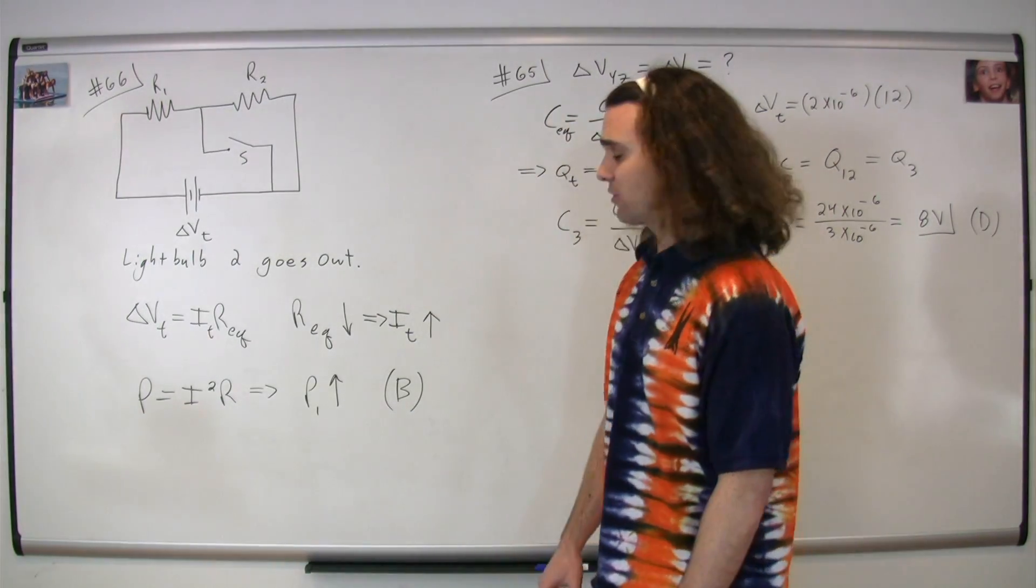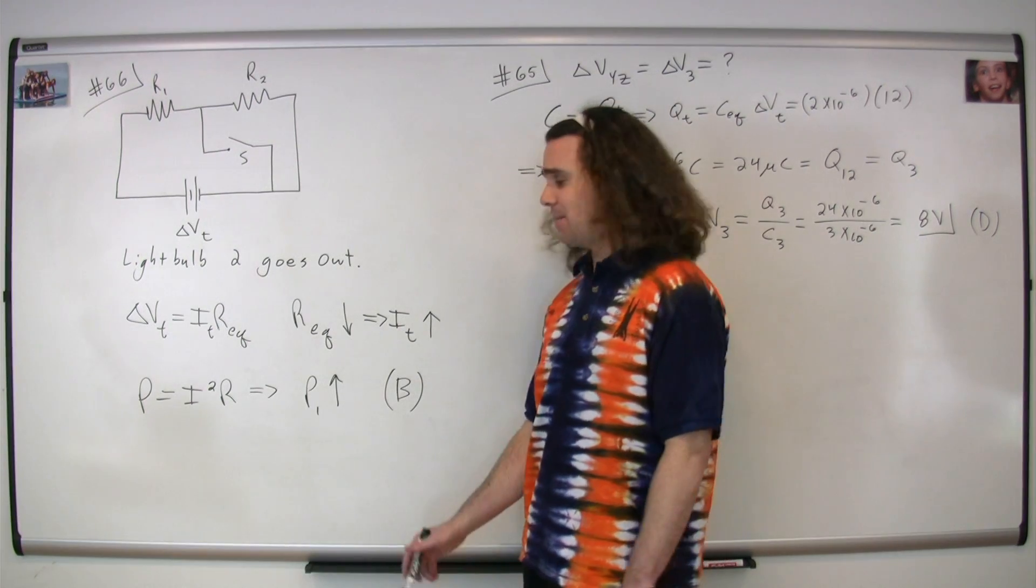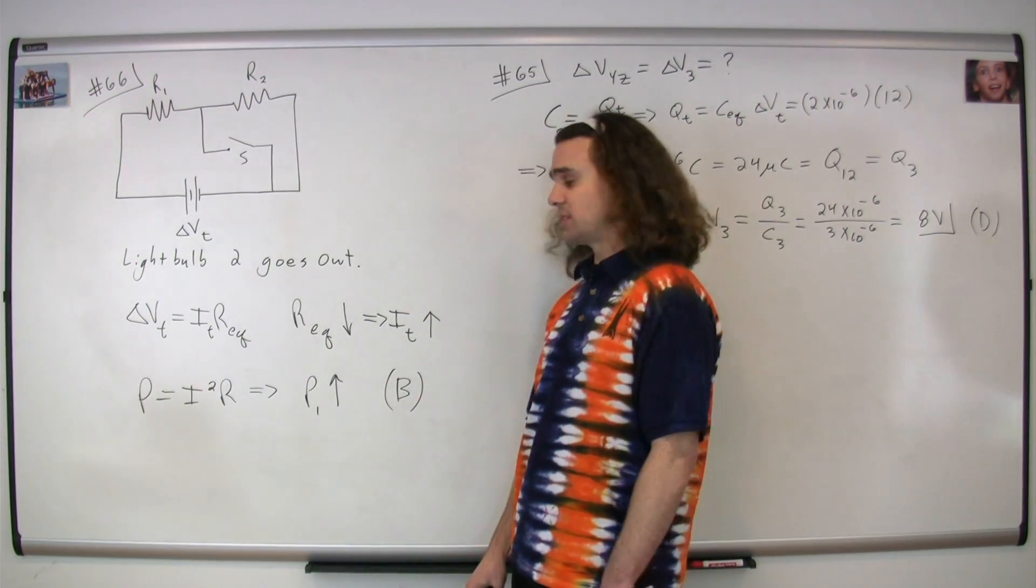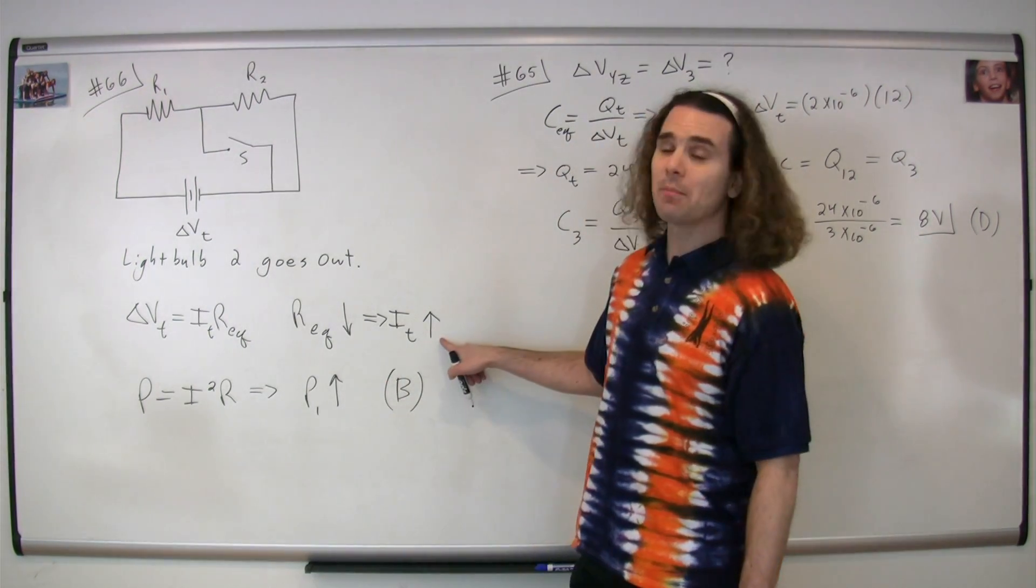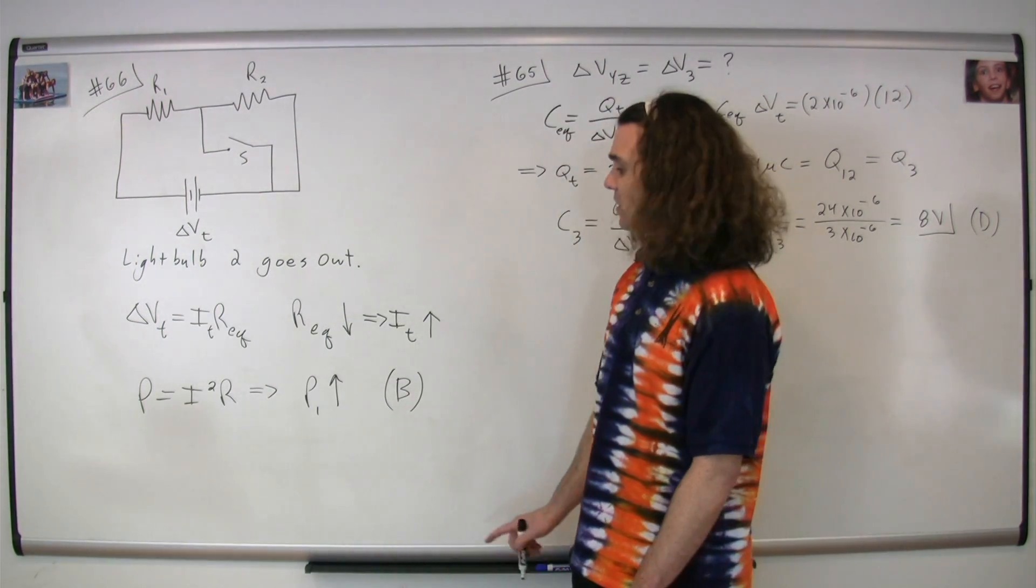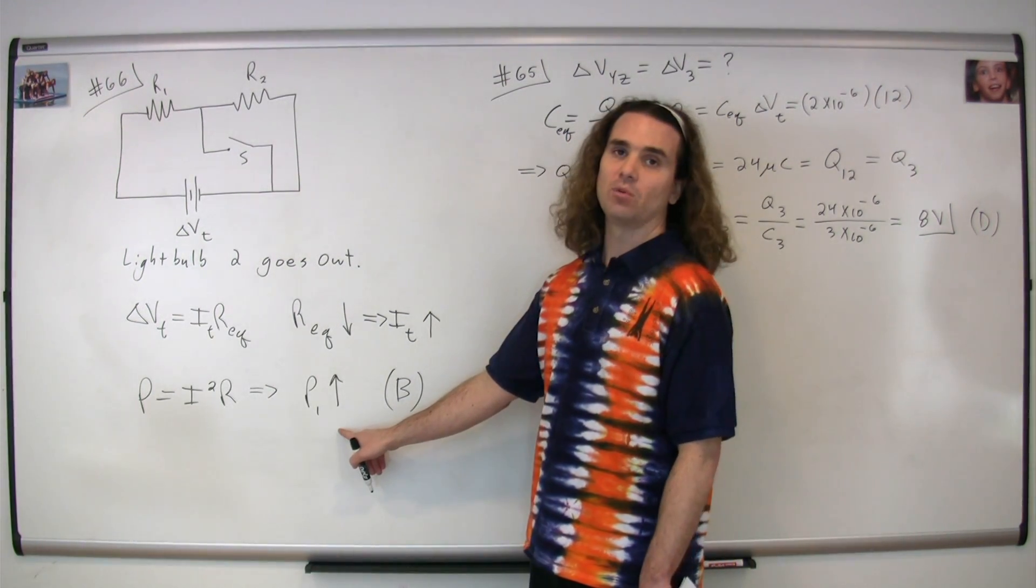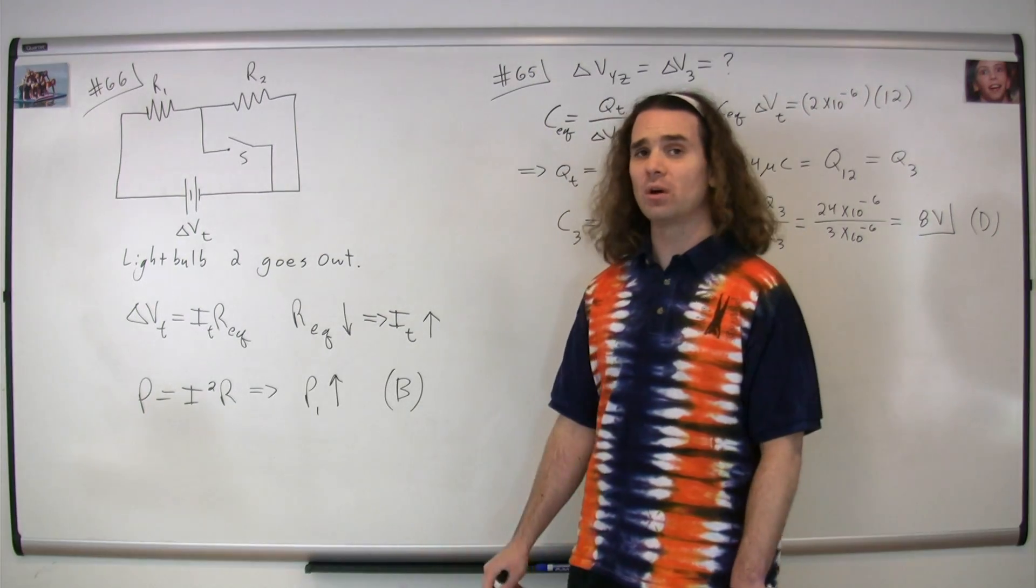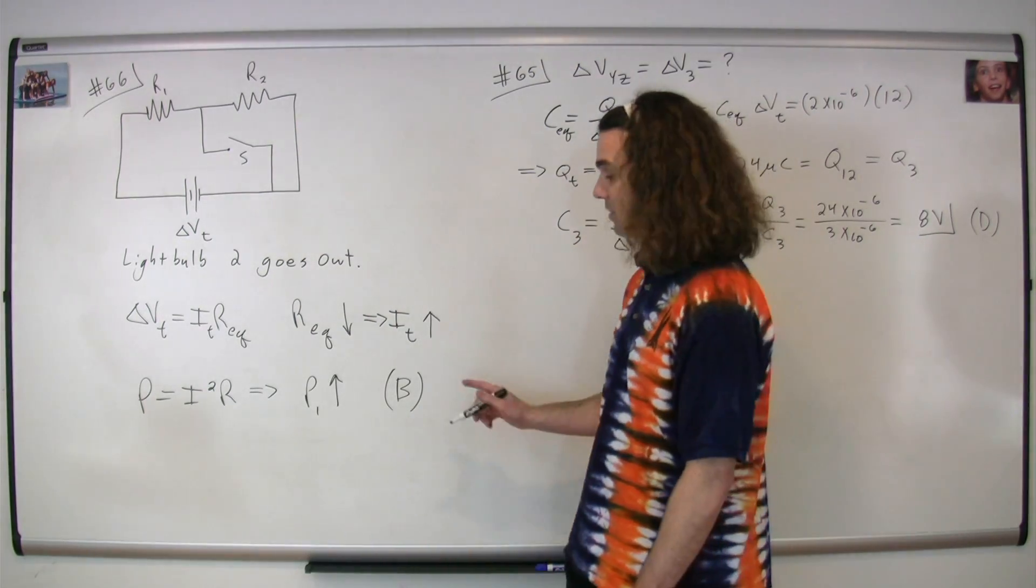There are three different equations for electrical power. The one we're gonna use this time is power equals current squared times resistance. We know the current through light bulb one increases. The resistance of light bulb one is not going to change. Therefore, the power output of light bulb one is going to go up. Light bulb one will burn brighter. The correct answer is B.